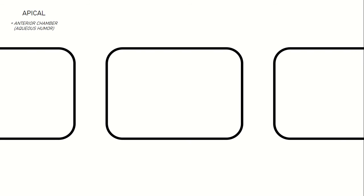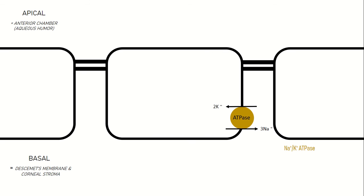First, we have a square that represents a single endothelial cell, and next, the neighboring cell. The apical part is the portion that faces the aqueous humor or anterior chamber, while the basal part faces Descemet's membrane and corneal stroma. In between the cells, we have the apical-type junction. The first important structure is the potassium-sodium ATPase that depletes and causes outflux of sodium, which in turn causes sodium to enter cells to maintain intracellular pH. A basal sodium-hydrogen exchanger encourages flow of sodium into the cells and hydrogen from the cell into the stroma. Sodium also enters cells via passive diffusion.